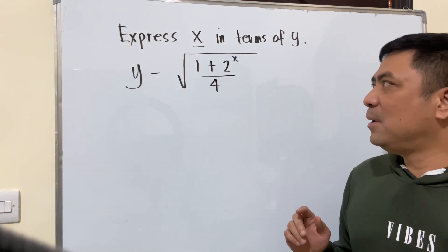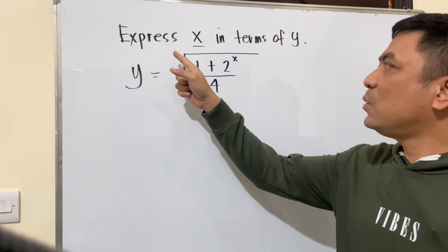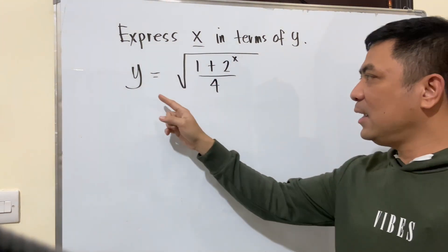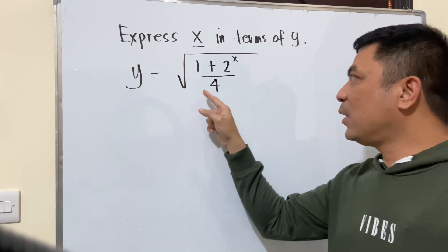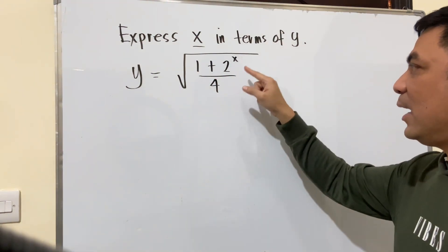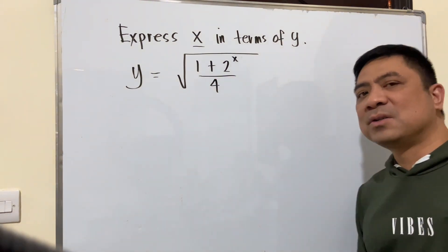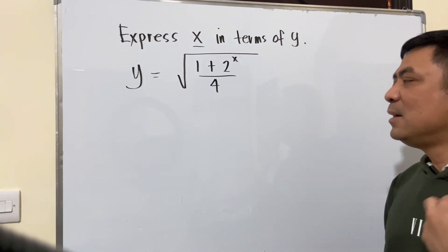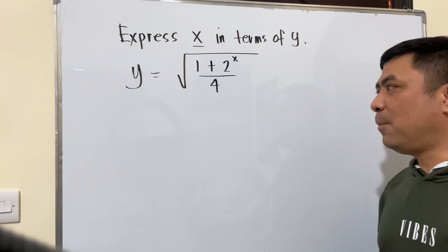We have again another simple problem wherein we are asked to express x in terms of y. Our equation is y equals the square root of 1 plus 2 raised to x over 4. This is a very simple problem, purely algebra, a manipulation of our operations.